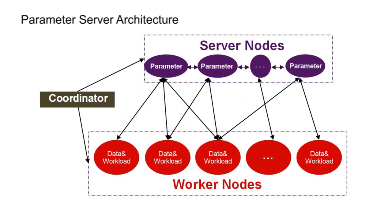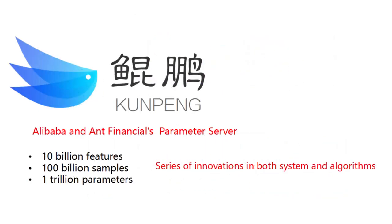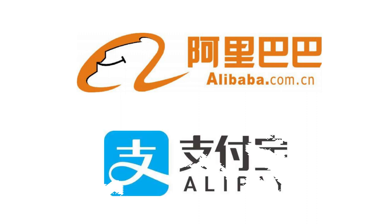The Kun Peng system is designed to solve large-scale machine learning problems with up to tens of billions of features and hundreds of billions of samples, which have become more and more common in today's industry for data mining and analysis. For example, e-commerce recommendation at Alibaba and transaction risk estimation at Alipay are both machine learning problems with very large-scale data.